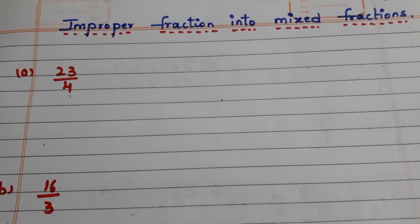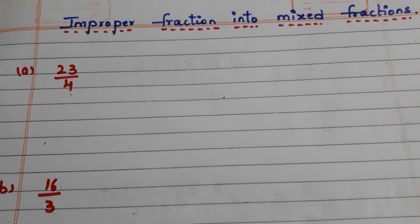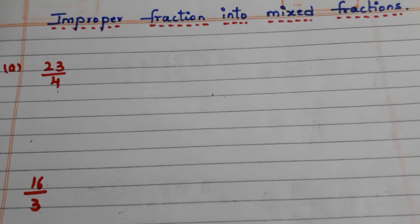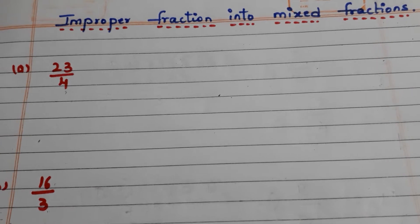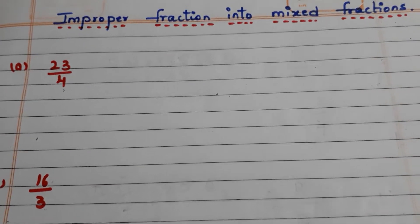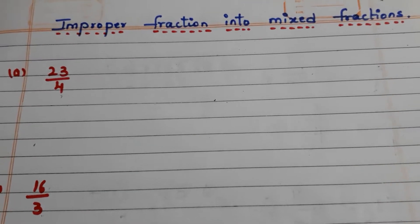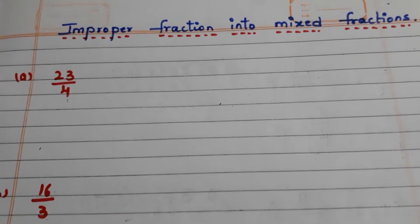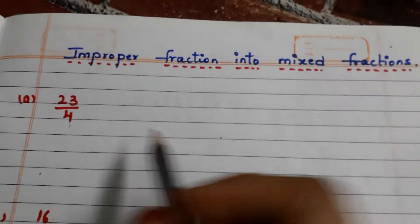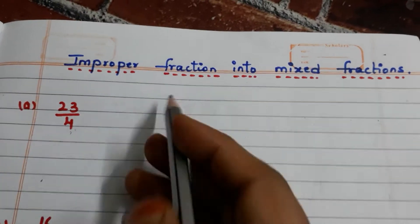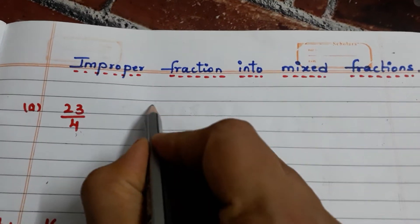Hi all, welcome back to my channel. In this video we are going to see how to convert improper fractions into mixed fractions. So let's get started. Here we have the first improper fraction: 23 by 4.